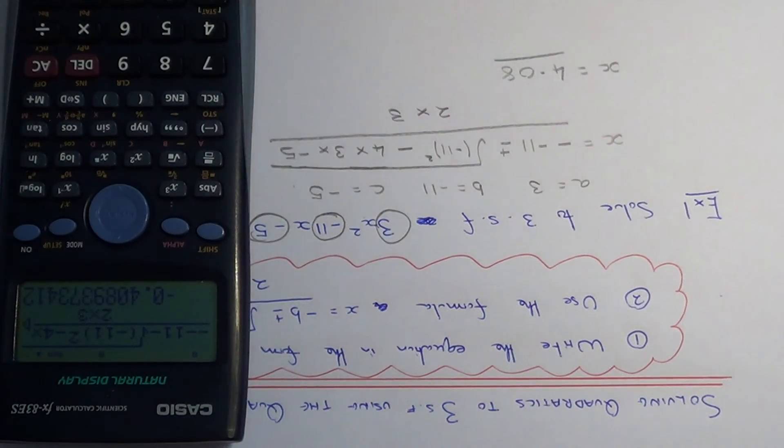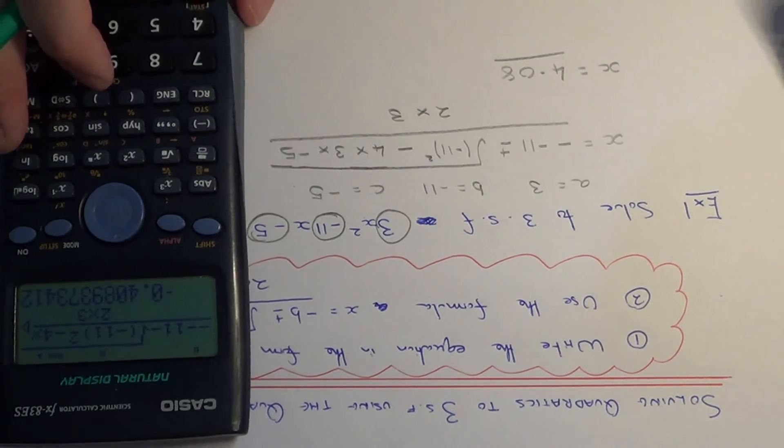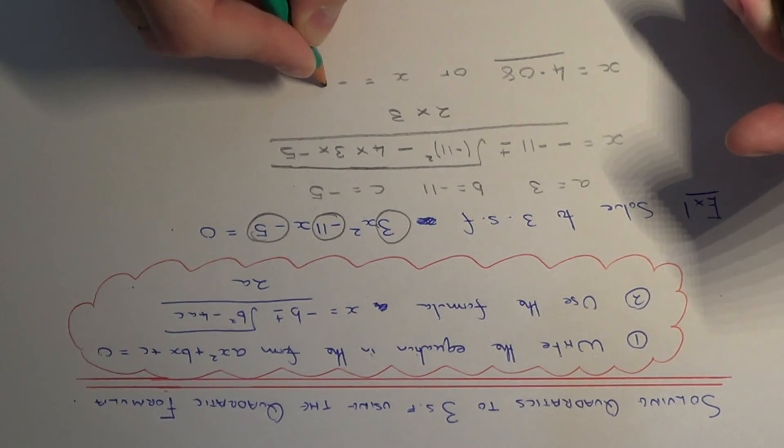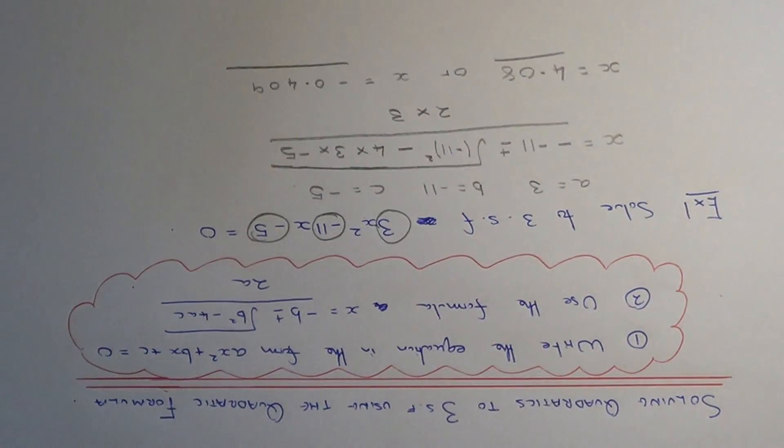If we hit the change button, to 3 sig figs that would be minus 0.409. Thanks for watching.